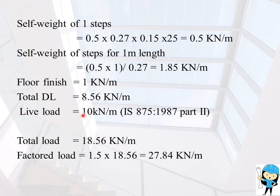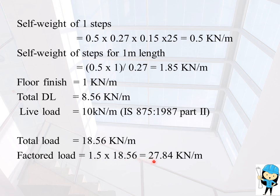Live load is equal to 10 kN per meter, taken from IS 875:1987 Part 2. Therefore total load equals 8.56 plus 10, which is 18.56 kN per meter. Factored load WU equals 1.5 into 18.56, which is equal to 27.84 kN per meter.